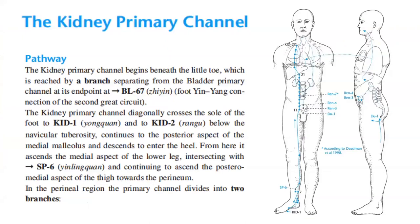The kidney primary channel begins beneath the little toe, which is reached by a branch separating the bladder primary channel at its endpoint at bladder 67, which is the foot yin-yang connection of the second grade circuit. The kidney primary channel diagonally crosses the sole of the foot to kidney 1 and to kidney 2 below the navicular tuberosity, continues to the posterior aspect of the medial malleolus and descends to enter the heel. From here, it ascends to the medial aspect of the lower leg, intersecting with spleen 6 and continuing to ascend the posterior medial aspect of the thigh towards the perineum.